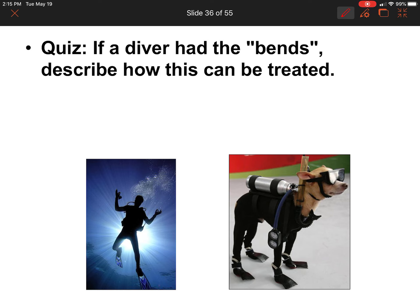If a diver has the bends, describe how this can be treated. When a diver is deep underwater and rises to the surface too quickly, the pressure decreases, and the gas inside their lungs comes out of solution — going into their soft tissues. That is not a good thing. The gas ends up dissolved in the soft tissues, which is very harmful.